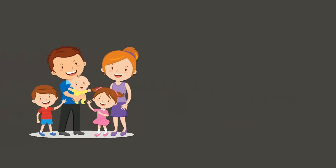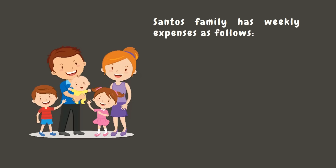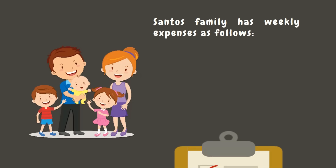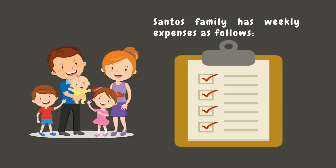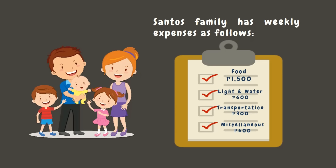Santa's family wants to create a pie graph for their weekly expenses as follows: they spend 1,500 pesos for food, 600 pesos for light and water, 300 pesos for transportation, and 600 pesos for other miscellaneous. Now let's create a pie graph to show their weekly expenses.